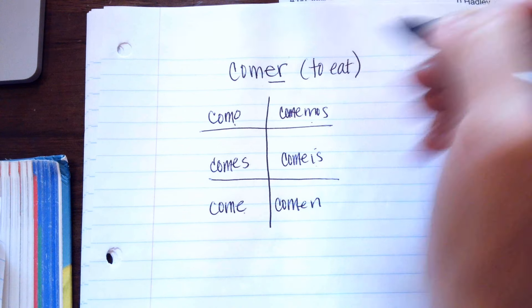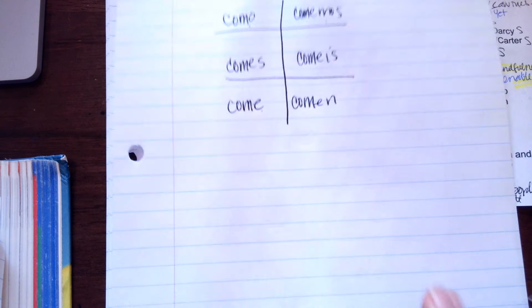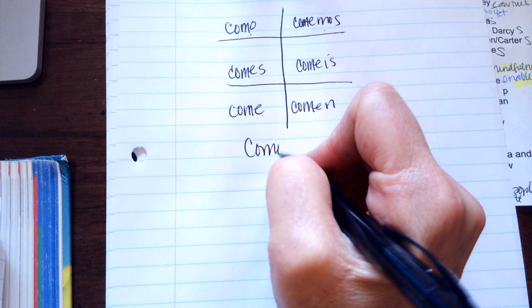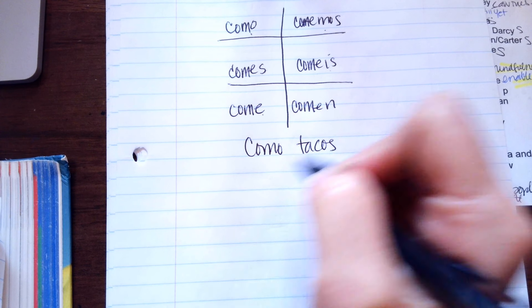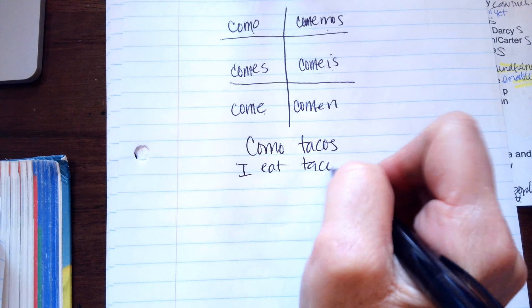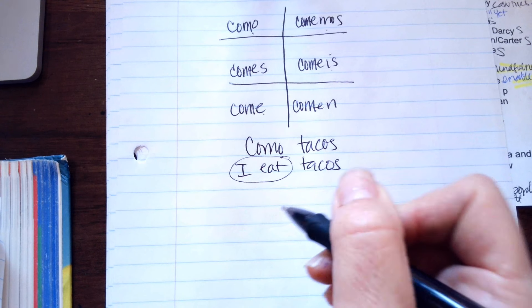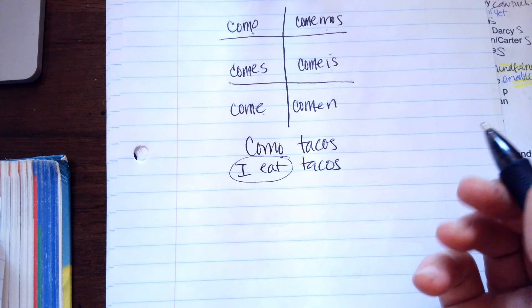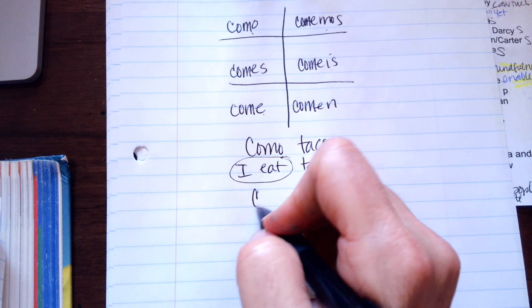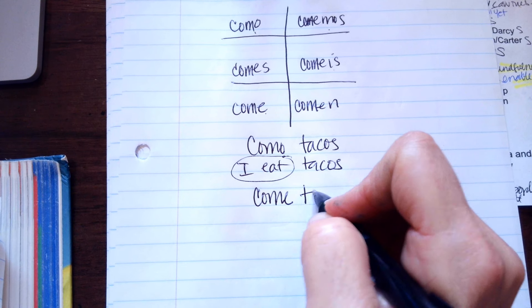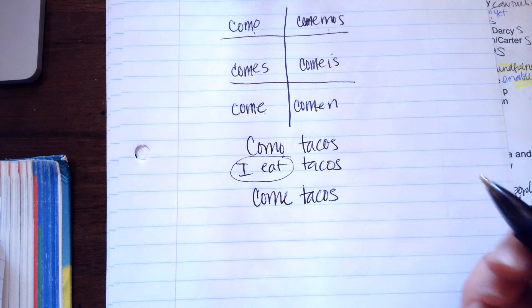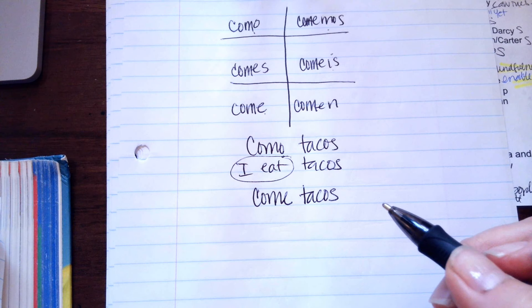So, if you're saying I eat tacos, you would just say como tacos. You wouldn't say I eat tacos. This whole thing means I eat. If you said Lauren eats, but you're just saying she eats, you would say come tacos. I can't say comer tacos. No, because this means to eat.